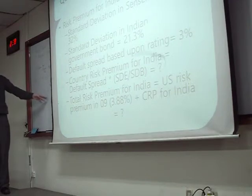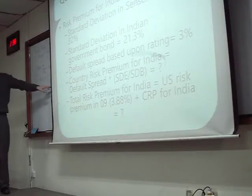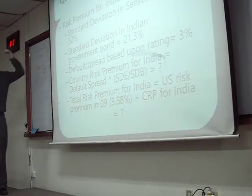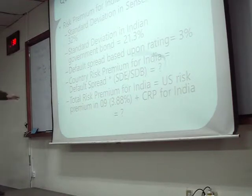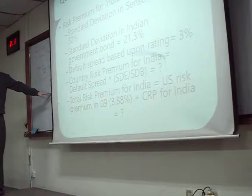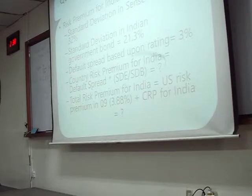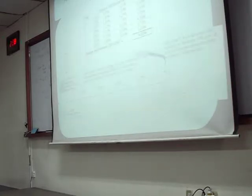So we add on 50%. Stocks move up and down 50% more than bonds. The default spread number is for bonds, so we want to change this number to make it more applicable for the stock market. With this risk premium, we're talking about the stock market. We calculate how much more risky stocks are than bonds in India, multiply by the default spread for Indian bonds, and we get a number — it's called the country risk premium, talking about the stock market.